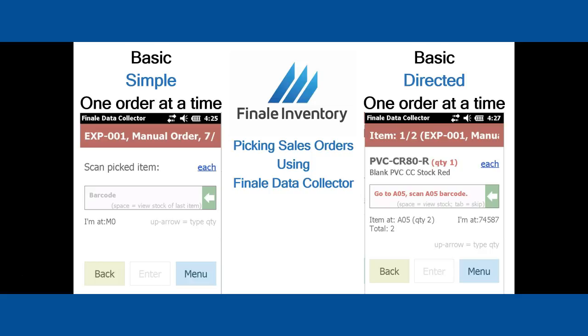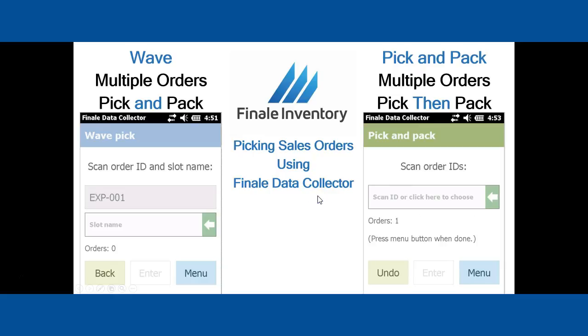There are two more advanced features in picking sales orders with the Finale Data Collector. The next two options are WAVE PICKING and PICK AND PACK. Wave picking is designed for you to process multiple orders in a wave — meaning you're going to pick and pack multiple orders at the exact same time, making one trip in the warehouse to pick and pack items across say five, ten, or twenty orders at a time, depending on how big a cart you have. That's called a wave.